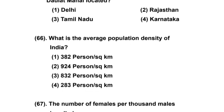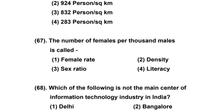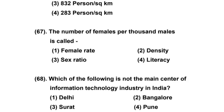What is the average population density of India? Options: 1) 382 persons per square kilometer, 2) 924, 3) 832, 4) 283. The right answer is option 1 — 382 persons per square kilometer.